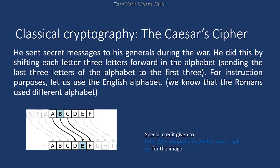He sent secret messages to his generals during the war by shifting each letter three letters forward in the alphabet. Look at the illustration here. For our instructional purposes, since we are familiar with the English alphabet, we will use it as our example. So if we have A, B, C, D, E, F, etc. — this is the real message. What he did was shift each letter by three: A becomes D, B becomes E, C becomes F, and so on. Both Caesar and his generals knew the encoding and decoding method.